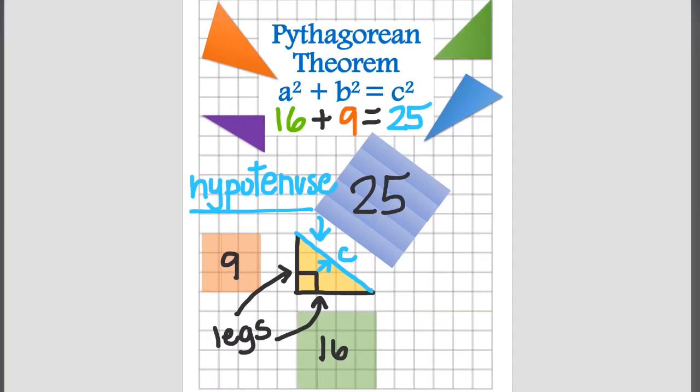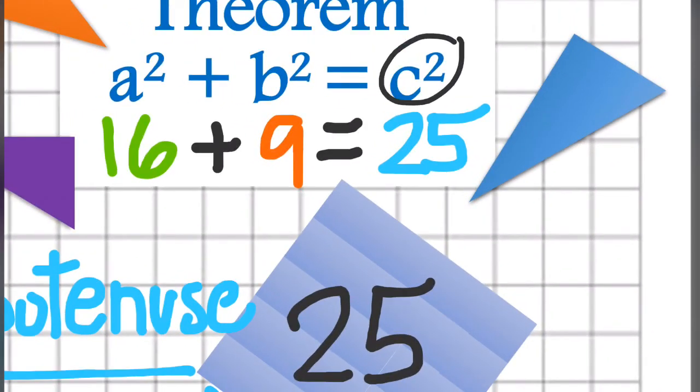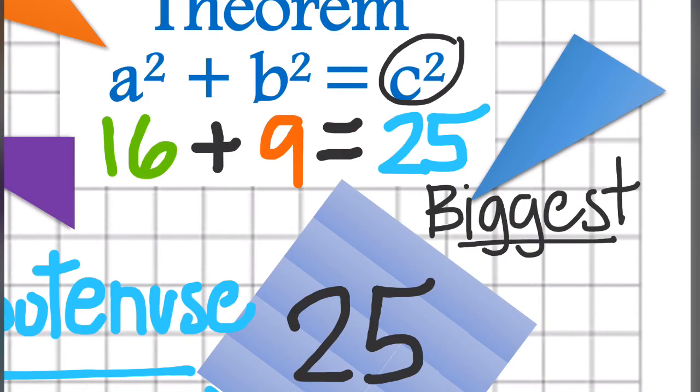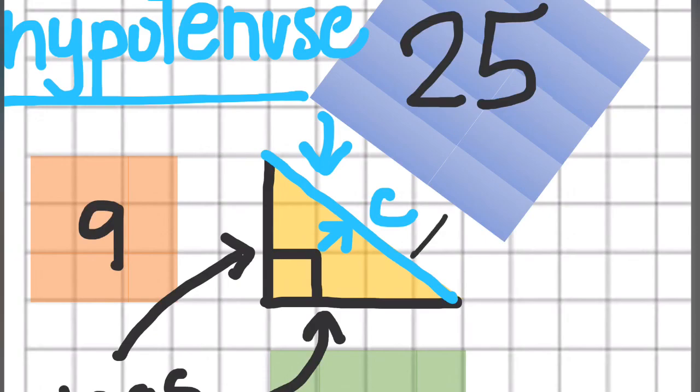Because C will always produce that larger number. Why? Because you're taking two and adding them together and giving you the biggest number. So C squared is always going to be your biggest number, but it's also going to be the longest side of your triangle.